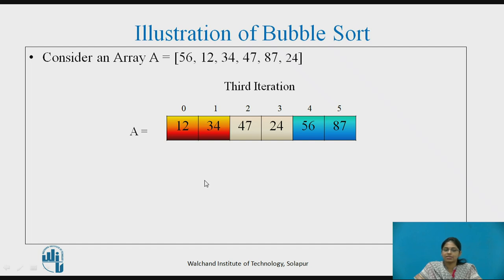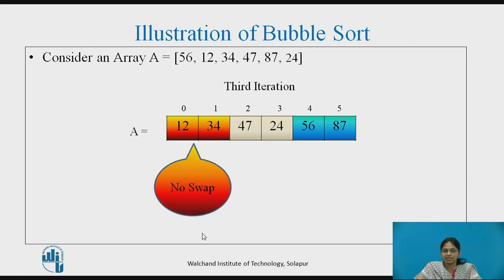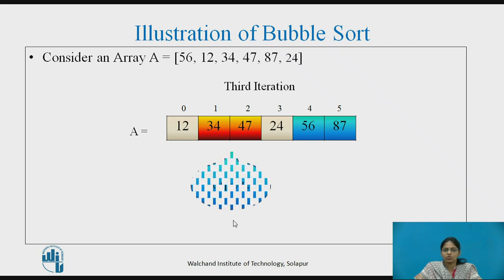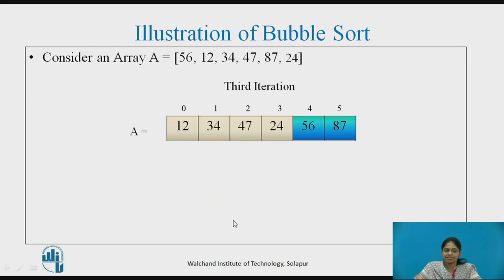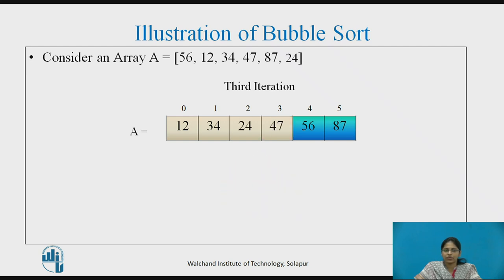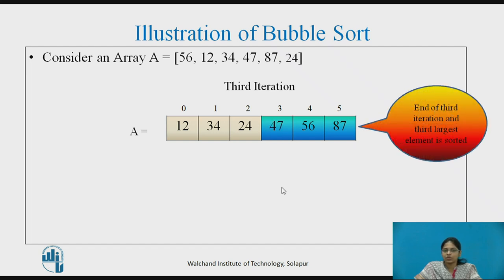In the third iteration, the comparison begins from the beginning. A[0] is lesser than A[1], so no swapping is done. A[1] is lesser than A[2], so no swapping is done. The next comparison is between A[2] and A[3], and A[2] is greater than A[3], so swapping is done. After swapping, 47 is placed at A[3]. This is the end of the third iteration, and the third largest element is also sorted.